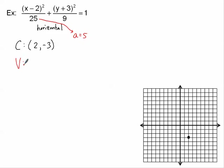The vertices are 5 units left and right from the center. Counting 5 to the right from (2, −3) gives the vertex (7, −3), and counting 5 to the left gives the vertex (−3, −3). Those are the two vertices.